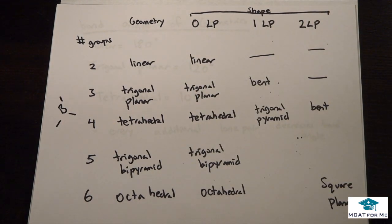What's the shape? Well, it's trigonal planar. And now if I ask you what's the geometry? Well, the geometry is also trigonal planar. So whenever it's zero lone pairs, the shape is the same as the geometry.